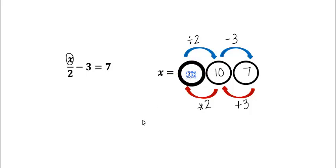What if we're not feeling very confident about this? We can go back and check our answers, just like how we normally would. But this time, we're starting with x equals 20. If that's the case, following the order of operations, the next thing we would do is divide by 2. 20 divided by 2 is 10. Next, we would subtract 3, which gives us 7.